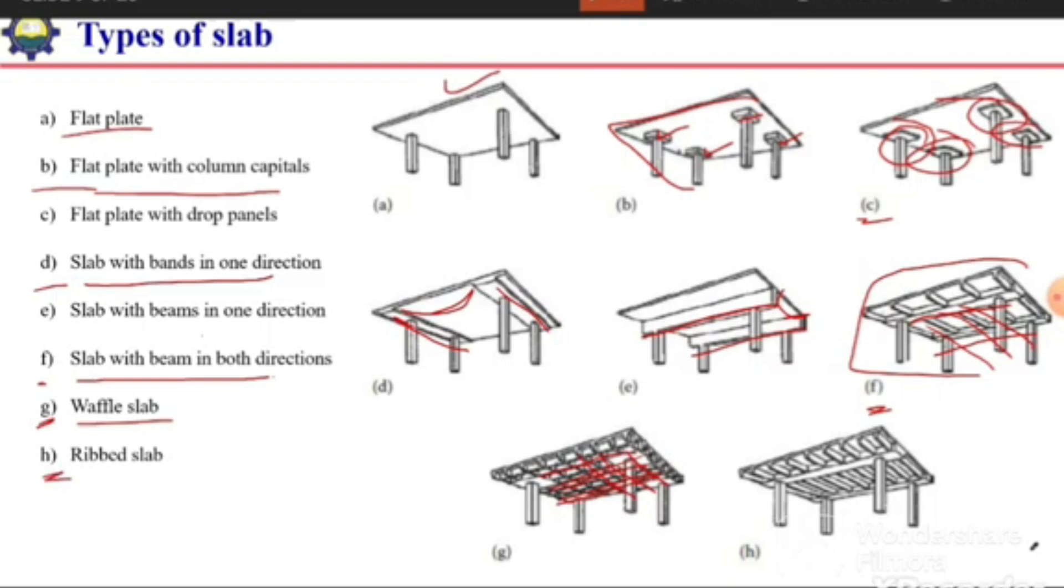A slab which is resting on the primary beams, and in the secondary direction or in the perpendicular direction we have closely spaced ribs instead of secondary beams. It is termed as ribbed slab.